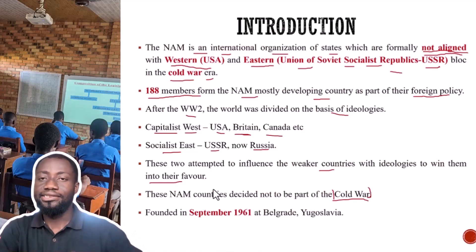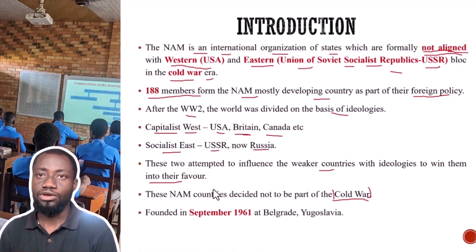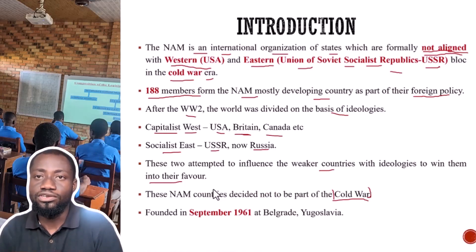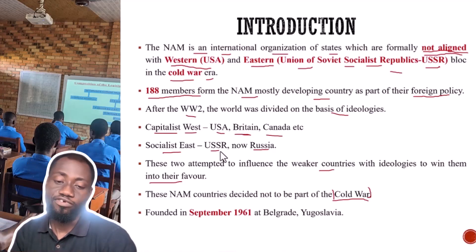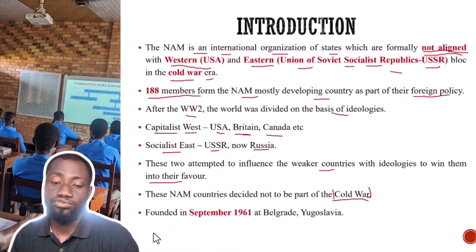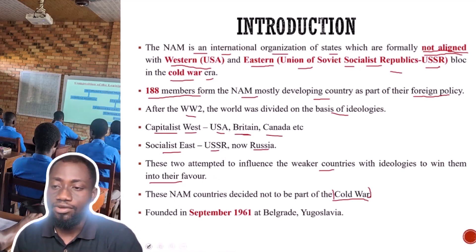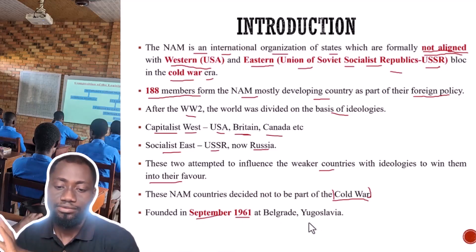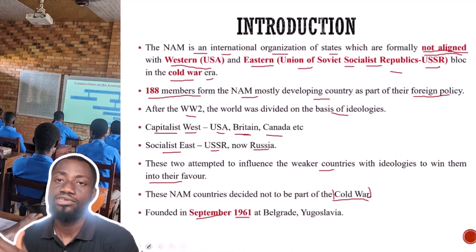So they decided not to align but to be neutral. Neutral means that I can deal with the West and I can also deal with the East. If I need something and want to go to the West, I can; if I need something from the East, I can also deal with the East. They decided to be neutral in their foreign policy. The non-aligned movement was founded in September 1961 at Belgrade in Yugoslavia.